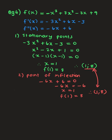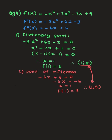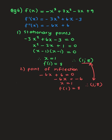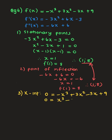For x-intercepts, let y = 0: -x³ + 3x² - 3x + 9 = 0. Multiplying through by -1: x³ - 3x² + 3x - 9 = 0. We look at factors of the constant 9: ±1, ±3, ±9. Testing these in the calculator, when x = 3 we get zero.